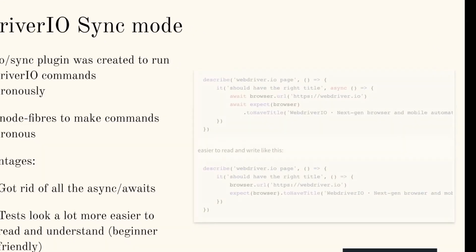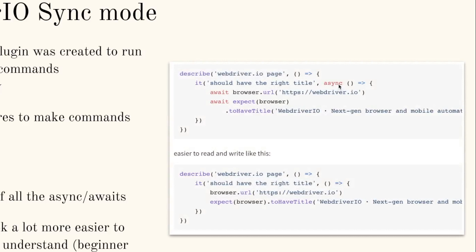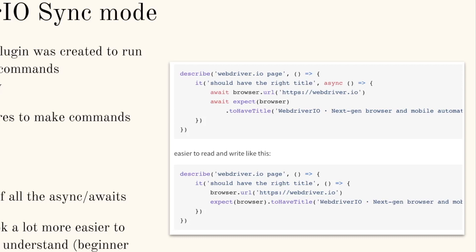So now let's take a look at that code. Instead of doing async/await and then doing await again, what they did was they got rid of all those async awaits. As you can see, we are not using the async function here, and we are not using the await keyword here either. Using this WebDriverIO sync plugin, it automatically knows we're trying to access this URL and then expecting the browser to have this title. We don't have to mention async/await for each line. WebDriverIO sync mode really made code a lot more readable and easier to understand for everyone, and that was one of the main reasons I like using WebDriverIO as well.